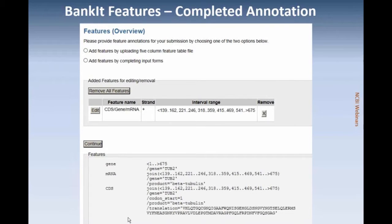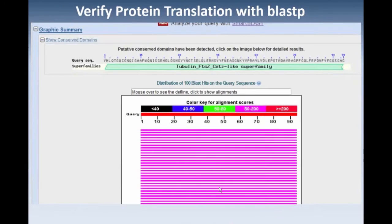In the BankIt submission tool, when you have your feature annotation correctly done, you will see this display for each sequence in your dataset. It's important that you consider doing a BLAST-P analysis. You can copy this translation and do a BLAST-P analysis. You get a lot of hits, and that's because we are doing the sequence determination of a commonly used molecular marker.